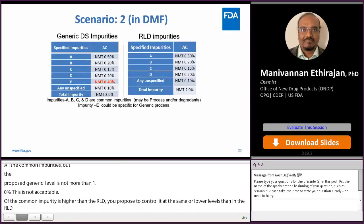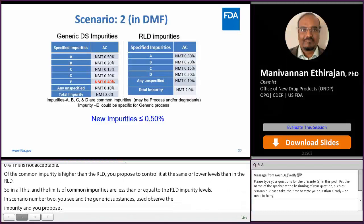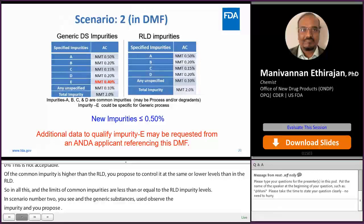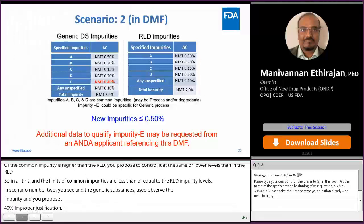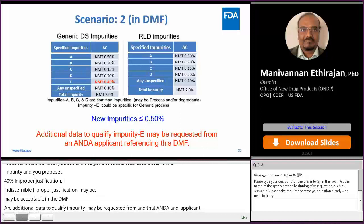In scenario number two, in the generic drug substance you observe a new impurity and you proposed 0.40 percent. With proper justification, we may accept this in the DMF. Remember, any new impurity at less than or equal to 0.50 percent with proper justification may be acceptable in the DMF. However, additional data to qualify the impurity may be requested from an ANDA applicant referencing this DMF, and in that case you need to reduce or tighten the limits based on the ANDA applicant's request.